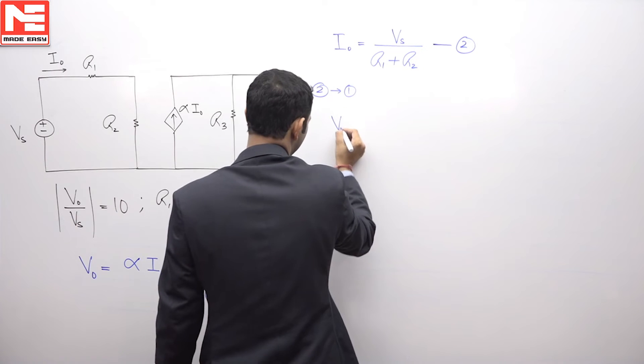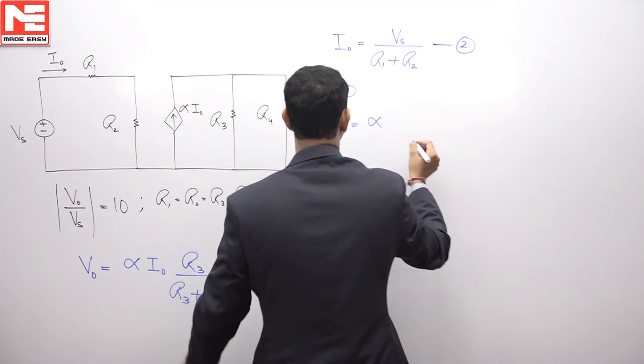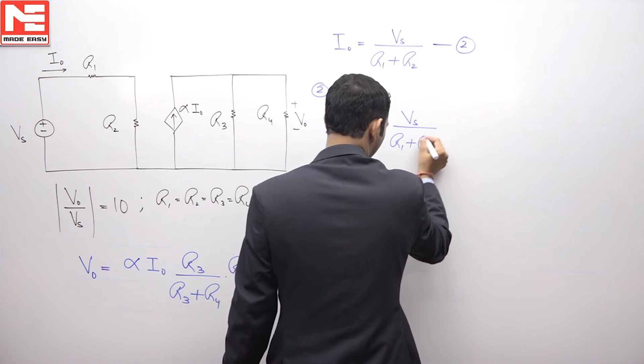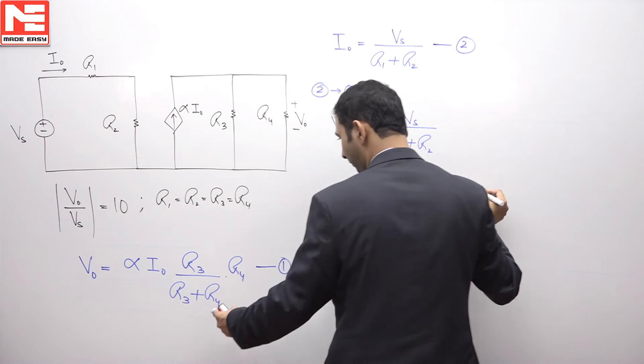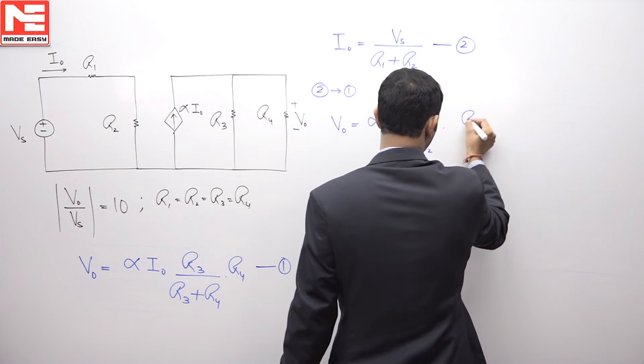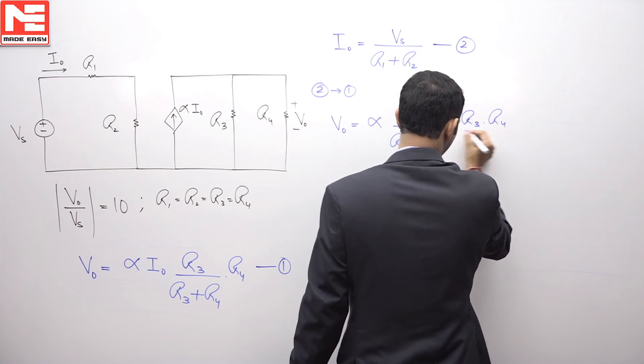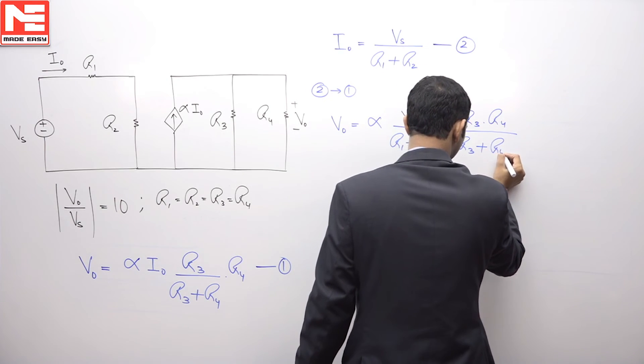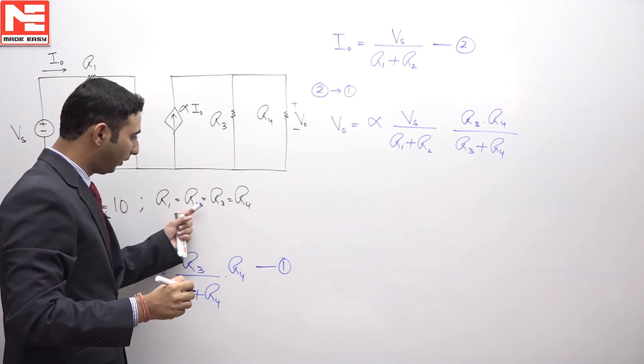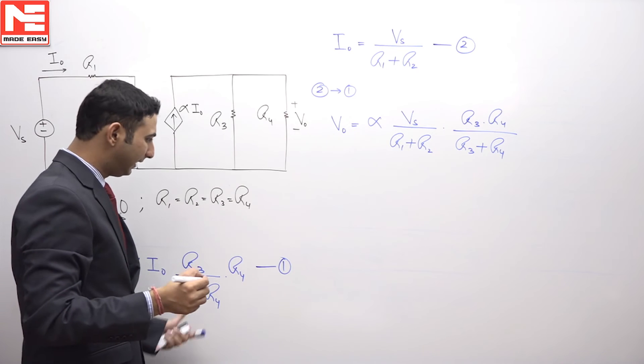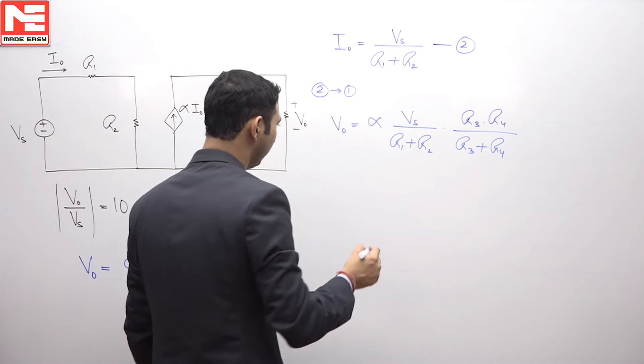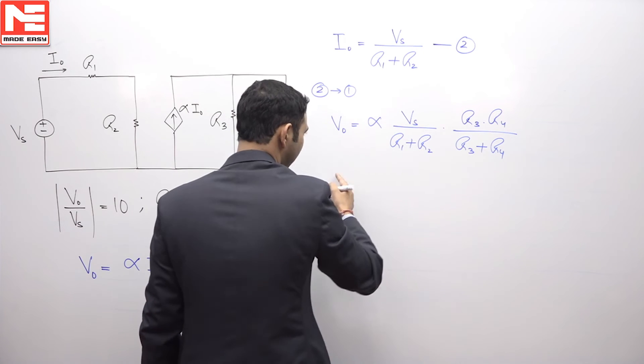So you can see V naught, this is equal to alpha I naught, this will be equal to Vs upon R1 plus R2 multiplied by the value of R3, R4 upon R3 plus R4. Now in the question it is mentioned that R1, R2, R3, R4 they all are equal. Let us assume these all values are equal to some common value R, substituting it over here. So you can see bringing Vs on this side.